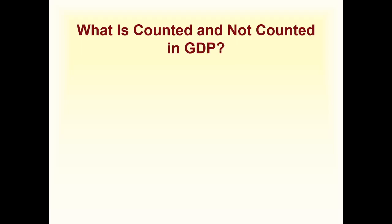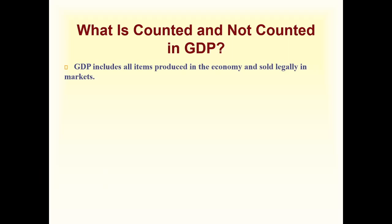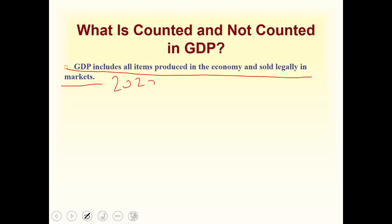Hello everyone. This is part 2 of the chapter on GDP. We will start with what is counted and not counted in GDP. First, GDP includes all items produced in the economy and sold legally in markets. Within a specific year, for example 2020, whatever China or the United States produces within their country's boundaries will be included in the GDP.